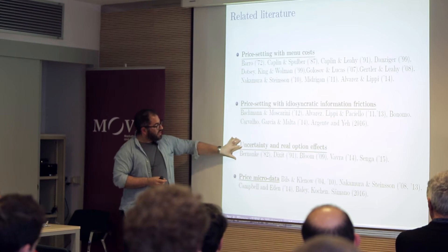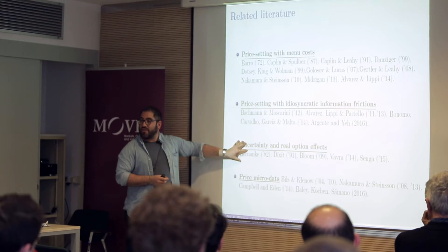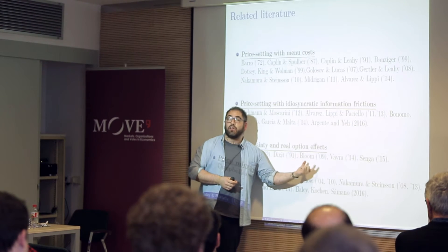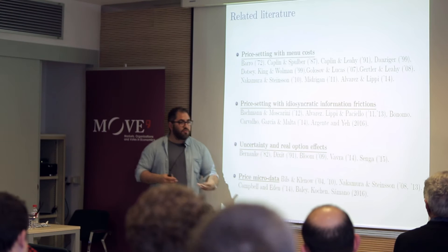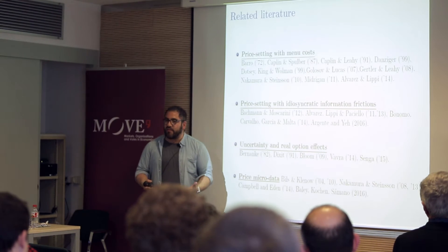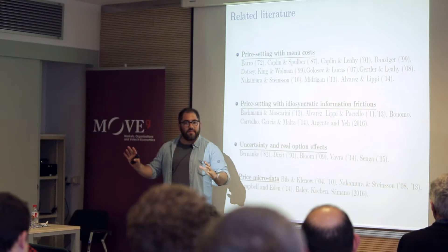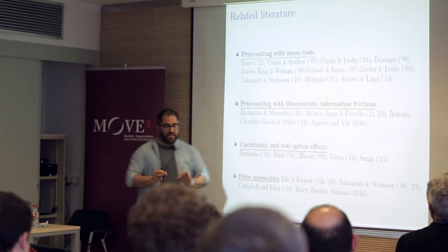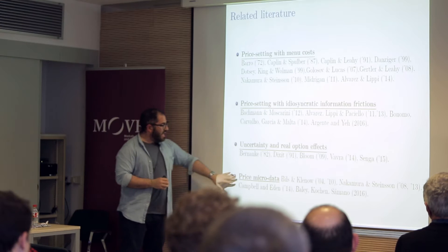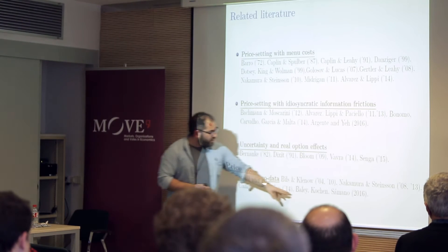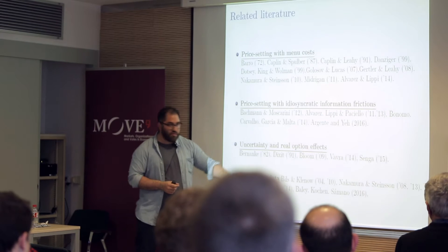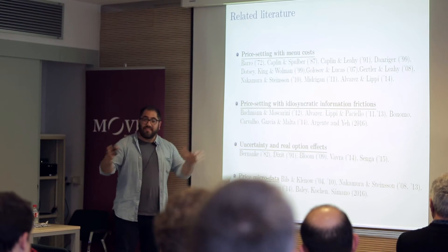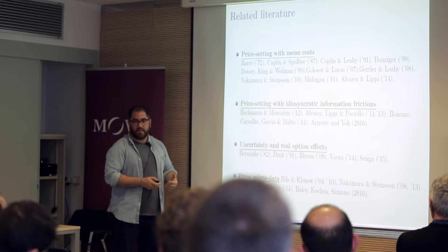In the literature, there's a large literature on price setting with menu costs. I focus on two papers: Golosov and Lucas, and Gertler, Lehy, and Midrigan — these are opposites in how they calibrate productivity shocks and the responses they generate. My model nests both Golosov-Lucas type shocks (small, frequent) and Gertler-Lehy type big Poisson shocks. There's also a literature on price setting with information frictions, but this model differs — the frictions are all idiosyncratic, not about observing the money shock. We also relate to work on experimentation and introduction of new products. Nick Bloom and others have introduced uncertainty increasing during recessions; I'll explain the difference with my setup.